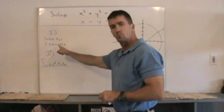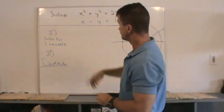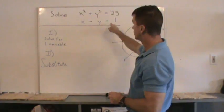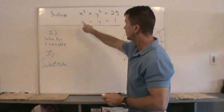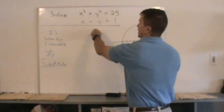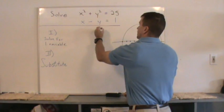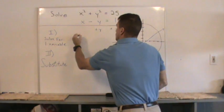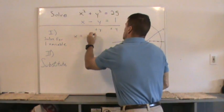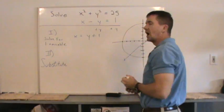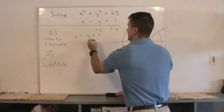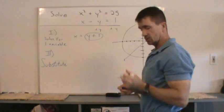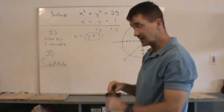Step one, we just solve for one of the variables. I'm going to take this x minus y equals 1, and I'm going to solve for that variable x. I'll just add a y on both sides. I notice that x will equal y plus 1. So I've now solved for one variable. I've isolated one variable.